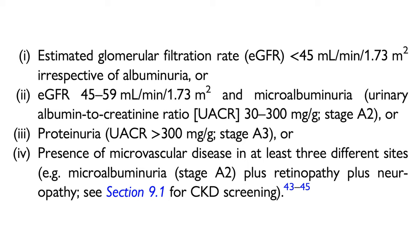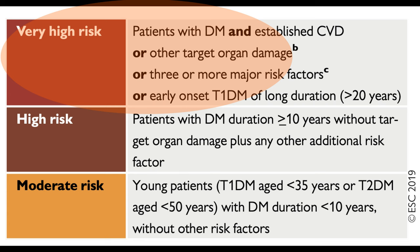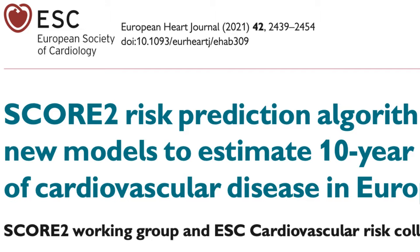Severe target organ damage is defined as an eGFR less than 45, or an eGFR between 45 and 59 with microalbuminuria 30 to 300 mg per gram, or proteinuria more than 300 mg per gram, or the presence of microvascular disease in at least three different sites: nephropathy, retinopathy, and neuropathy. Patients with established atherosclerotic cardiovascular disease or severe target organ damage are very high risk. But the majority of diabetic patients do not have clinical atherosclerotic disease or severe target organ damage, and previously there was no scoring system for those patients.